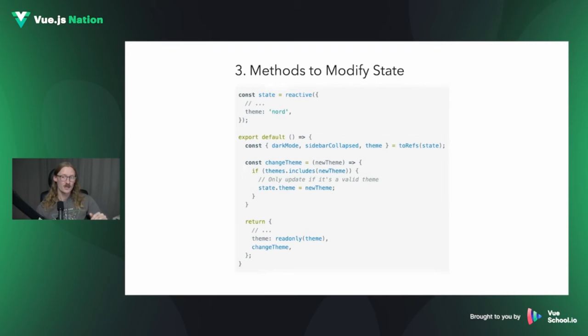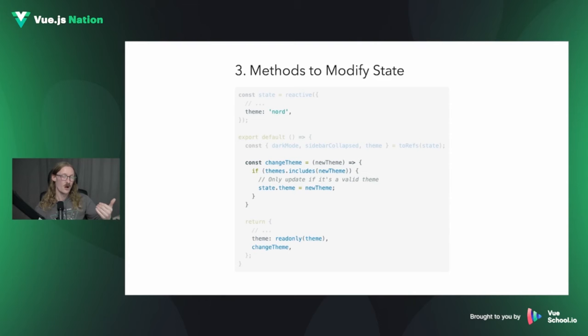ToRefs takes our reactive object and returns individual refs that we can pass around separately. In this example, all that's needed is the dark mode value — we can pluck off that single variable instead of passing around the entire giant state object, which could become much larger in a real application. We also add methods to modify state, like a changeTheme method. To prevent components from updating a variable directly, we call the readonly method, which returns a read-only ref that only our composable can update.